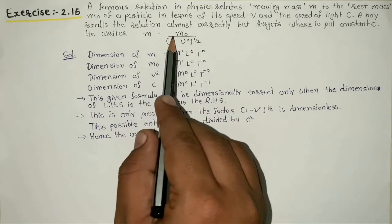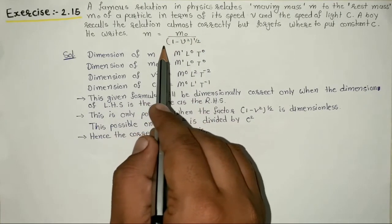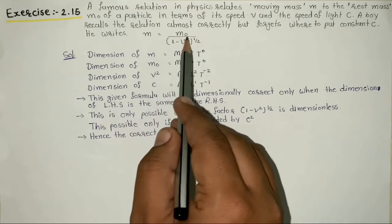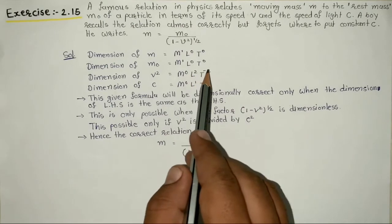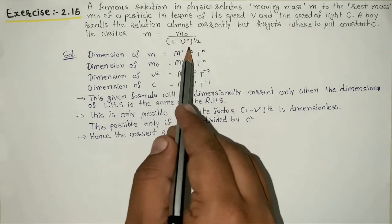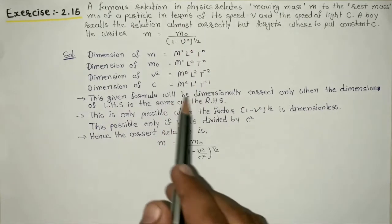Here 1 is a constant term which is already dimensionless. But v square has dimension M⁰L²T⁻². To make it dimensionless, we can use c which has dimension M⁰L¹T⁻¹.